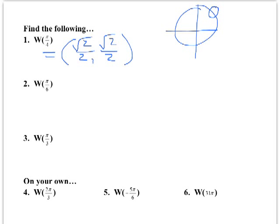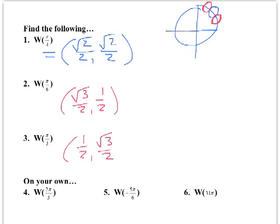What about π/6? Looking at the unit circle, π/6 is in the first quadrant, and its coordinates are (√3/2, 1/2). And for π/3, which is also in the first quadrant, the coordinates are (1/2, √3/2).